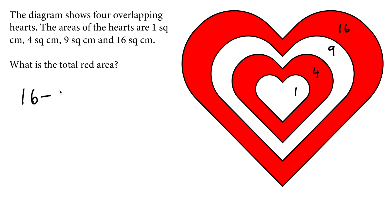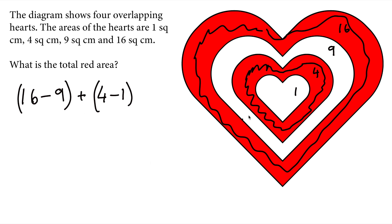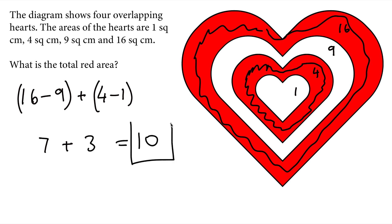So it should look like: 16 minus 9 is the area we have, and if we do 4 minus 1, that's the area we have inside the smaller heart. If we add them, that's the total red area. So the first expression is 16 minus 9 is 7, plus 4 minus 1 is 3, and the total shaded area is 10 square centimeters — that is our answer.